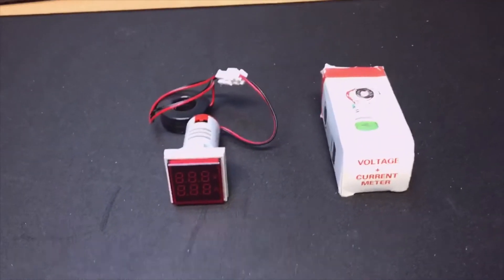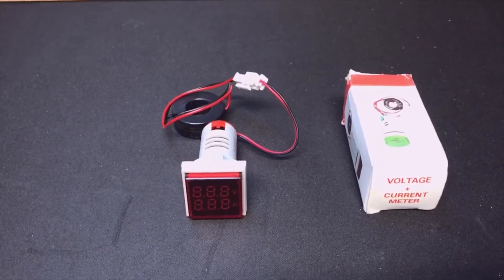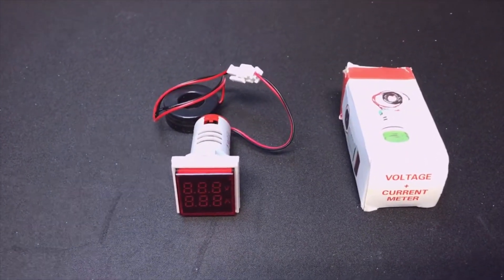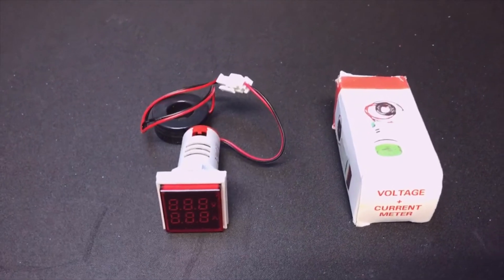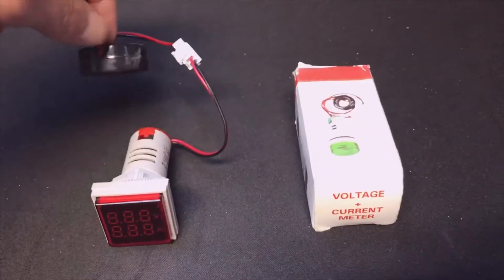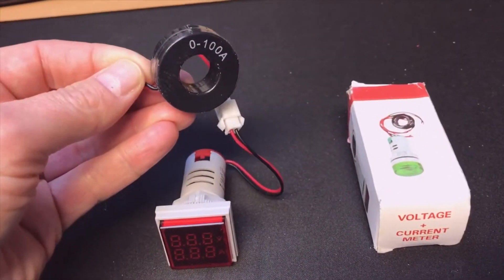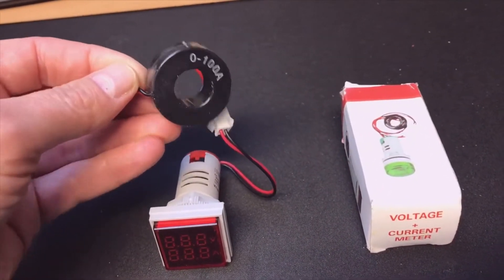Hi, this is Tony, and today in the mailbox I received my $5 voltage and current meter and it looks quite nice. It's a little coil to measure the current. It says here it can do from 0 to 100 amps, which is a lot.